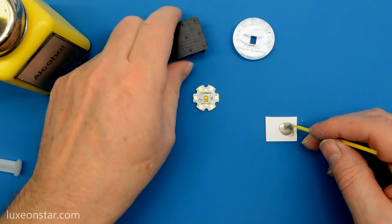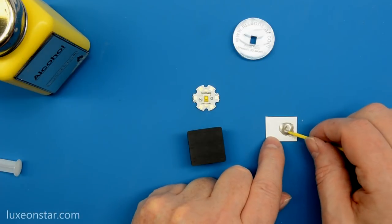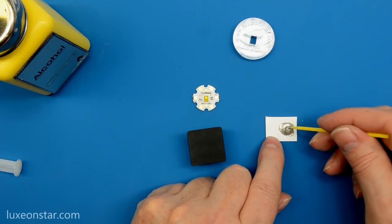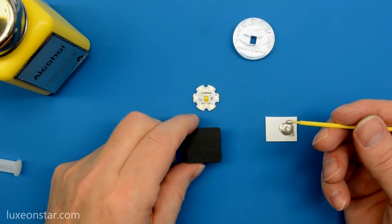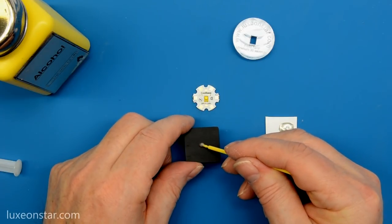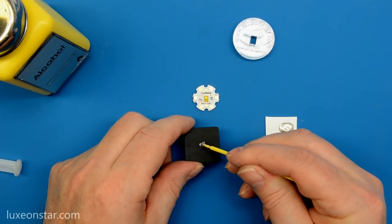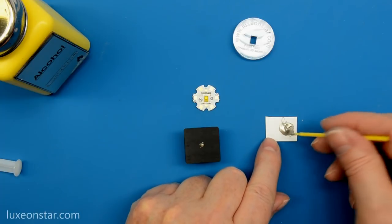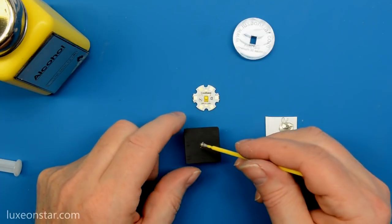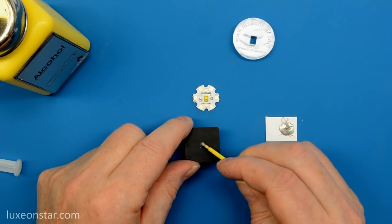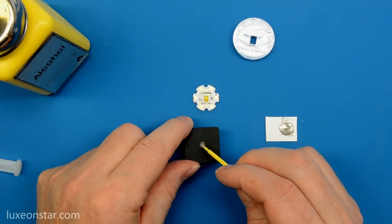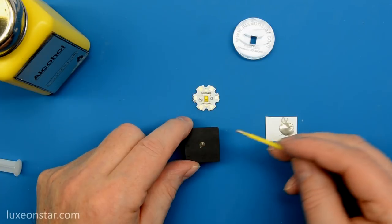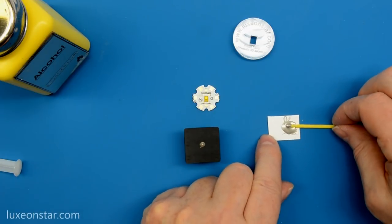Now we want to put a small drop where we want the center of the LED on the heat sink. So we want this LED on the center of this heat sink, so we're going to put a drop right in the center. And again, this is not very much. Avoid the temptation to spread it around, just put a small drop in the center, and that should be about right.